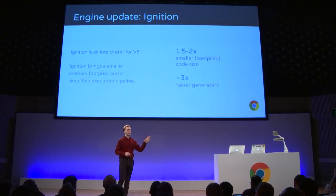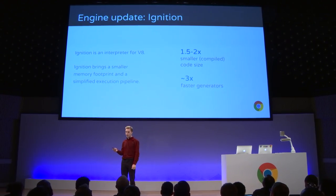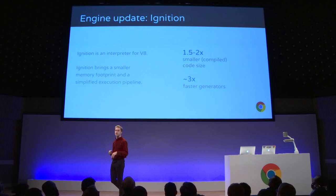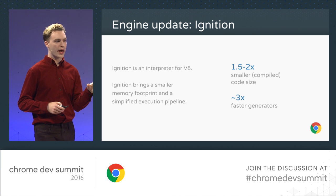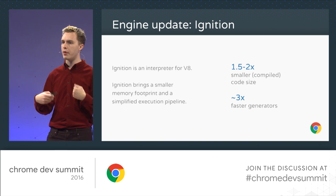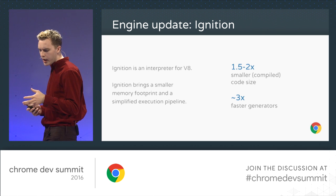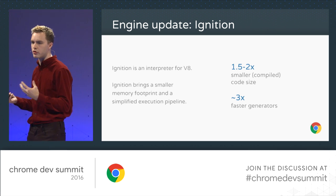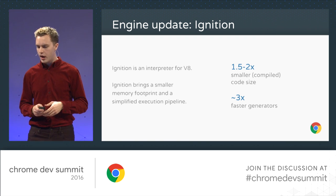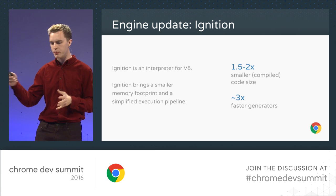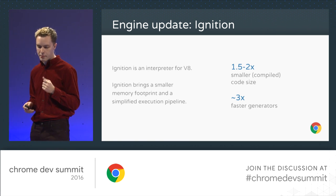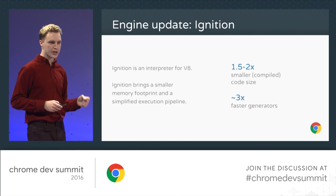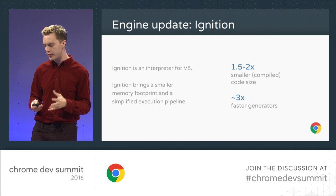We've been hard at work introducing an interpreter to V8 called Ignition. You might think an interpreter is slower than an optimizing compiler, but an interpreter has a lower memory footprint than a compiler that must compile all JavaScript into native code. It's also a simpler piece of software, making it easier to make optimizations with a simplified execution pipeline. We can also choose how we tier up to full speed. Adding the Ignition interpreter brought memory savings and allowed us to make improvements which made ES6 generators almost three times faster.